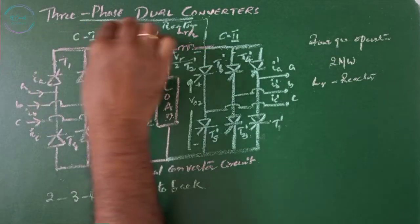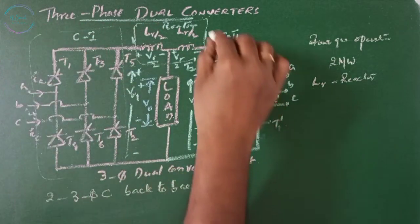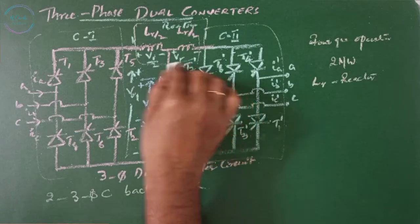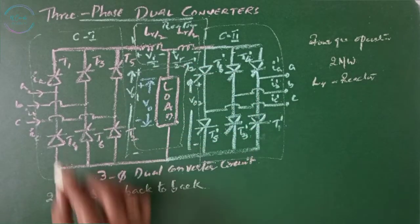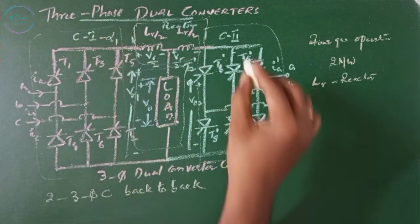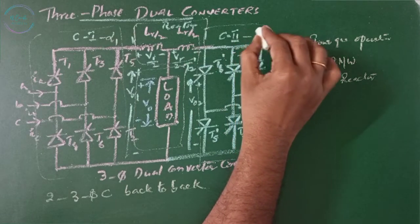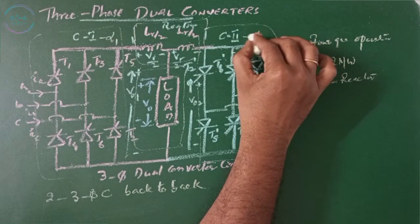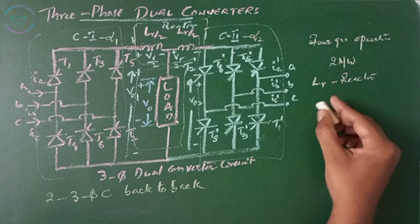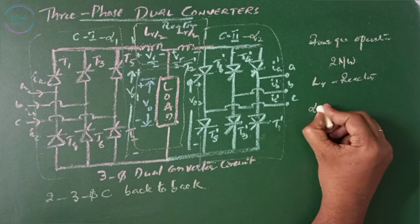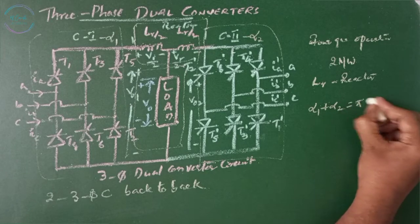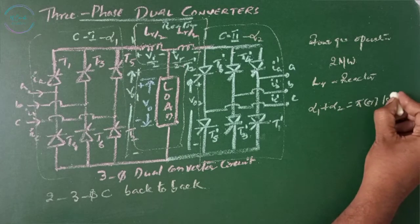These are converter 1 and converter 2 connected to the load. Converter 1 is operated at firing angle alpha 1, also known as the delay angle, while converter 2 is operated at firing angle alpha 2, with the condition that alpha 1 plus alpha 2 equals pi or 180 degrees.